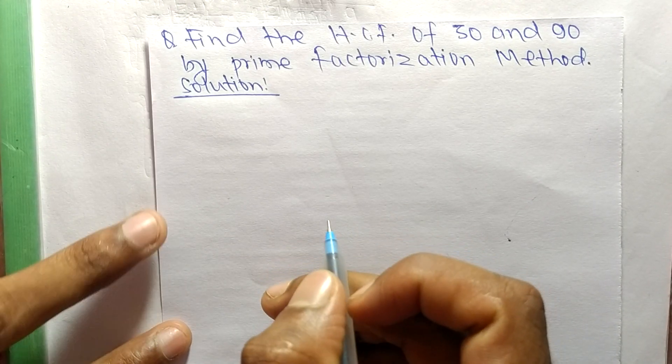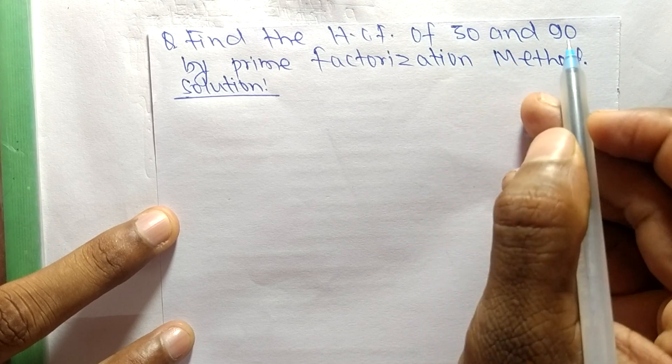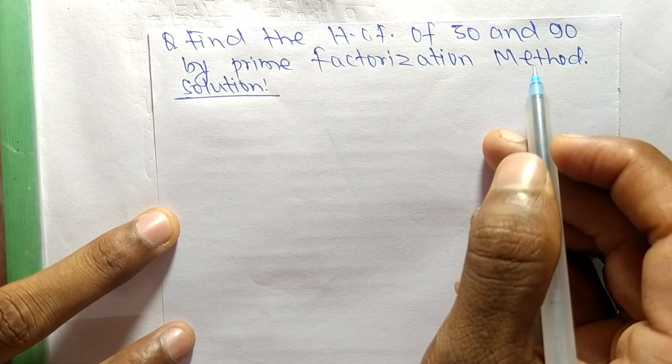So today in this video we shall learn to find the HCF of 30 and 90 by prime factorization method.